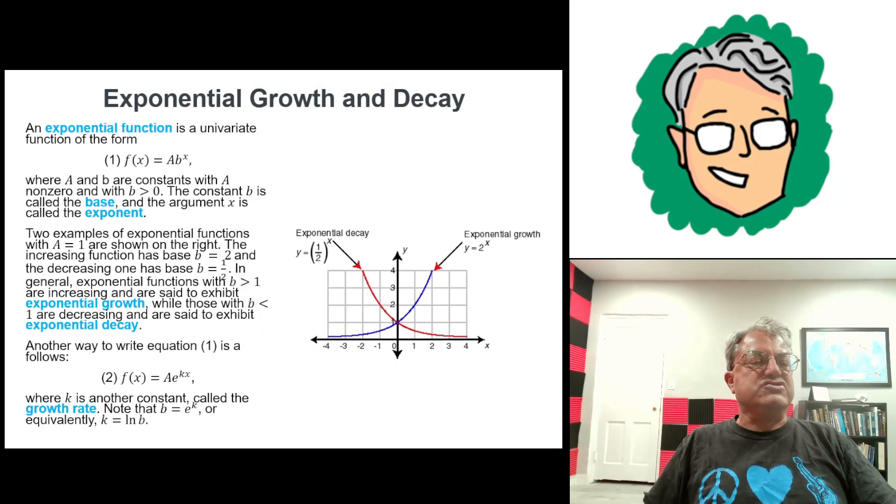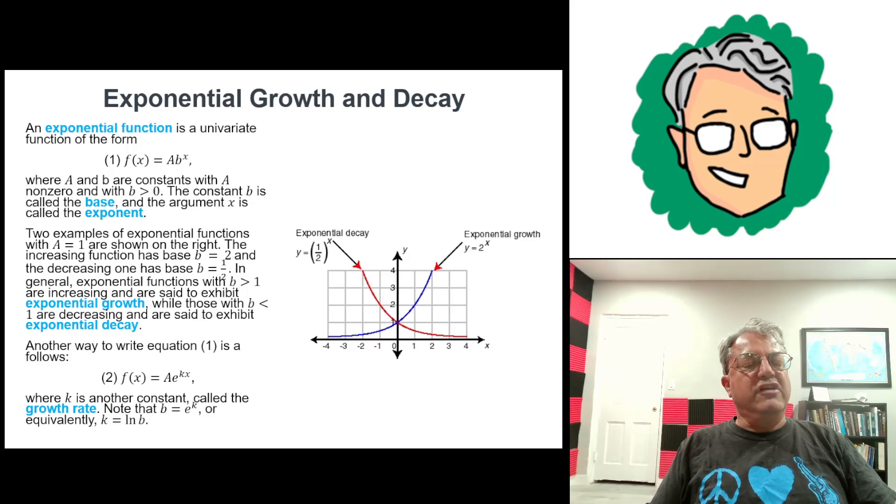So what is exponential growth and decay? Well, it's just the behavior exhibited by exponential functions. I guess first I have to define those. An exponential function is just a function of the form f(x) = ab^x, where b is a positive real number, a is just an arbitrary non-zero real number, and x is the argument of the function, which is a real number.